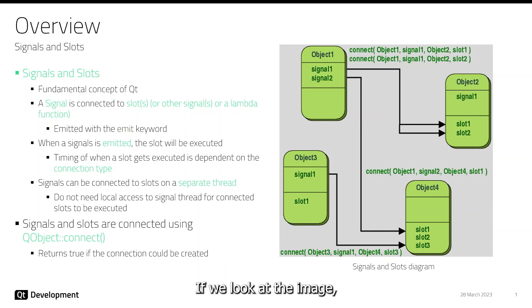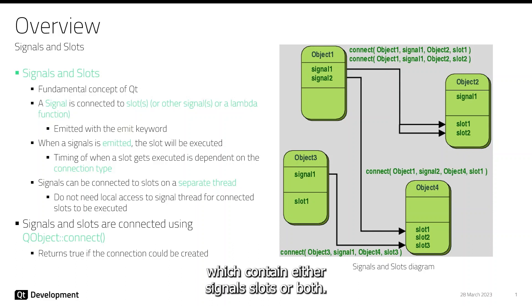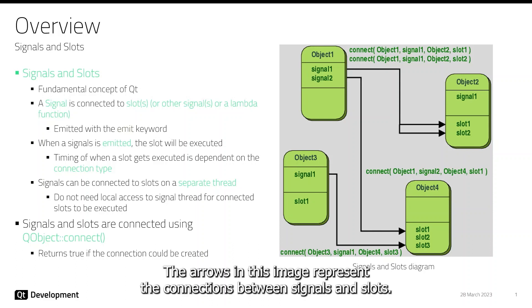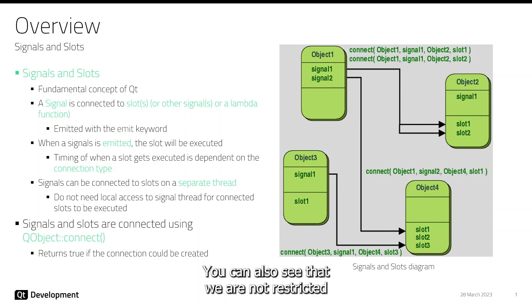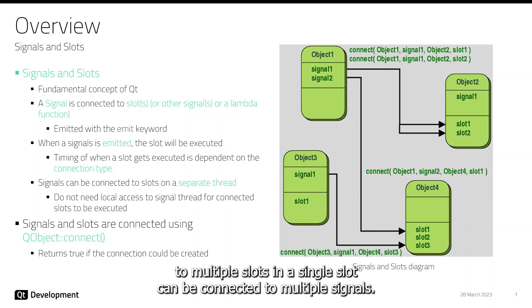If we look at the image, you can see the representation of this concept visually. Looking at the image on the right, you can see we have four objects which contain either signals, slots, or both. The arrows in this image represent the connections between signals and slots. You can also see that we are not restricted to creating a single connection — a single signal can be connected to multiple slots and a single slot can be connected to multiple signals.